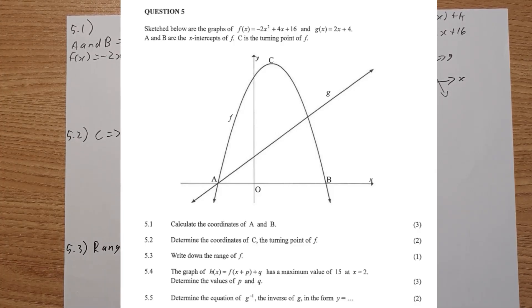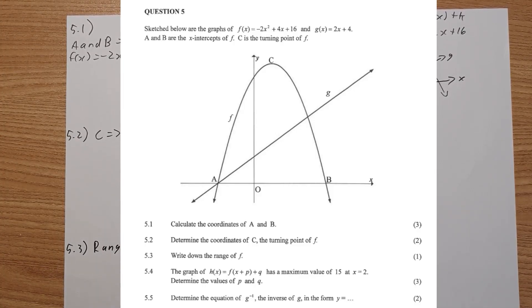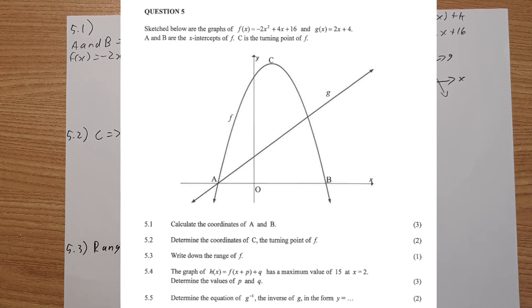In today's video we are doing question 5 of the May-June Maths Paper 1 videos. So enjoy the video and let's jump into it. Let's have a look at question 5. So question 5 is the next graph question in your question paper. They've given us a parabola and a straight line that intercept.